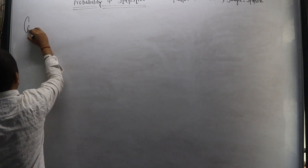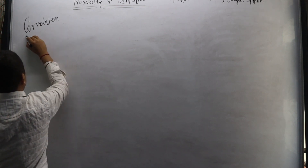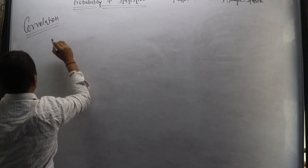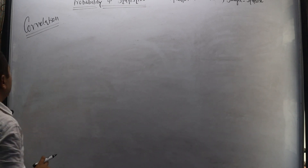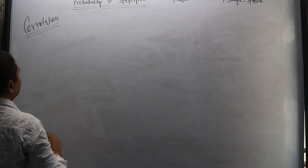Welcome to Technometrics Melody. In this video, we will talk about correlations. Correlation represents the degree of association. It does not explain causation.